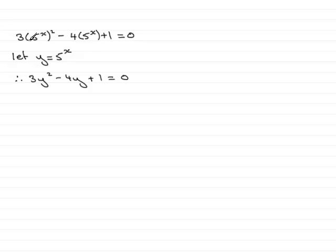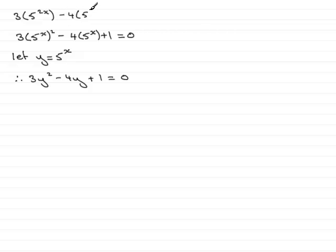Now it is quite often possible that you won't see questions like this presented in this particular format. This particular term can often be written as 3 multiplied by 5 to the power 2x, by the index rule where you multiply these two together — these two are equivalent to one another. So watch out for questions presented in this format.